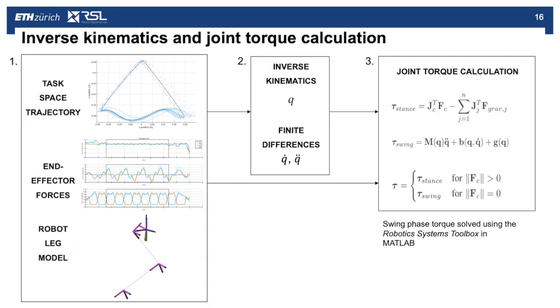Given that task space trajectory, the end effector forces and the robot leg model, we can calculate using inverse kinematics the joint positions, and then from finite differences we calculate the joint velocity and acceleration. We also take that as an input into our joint torque calculation.